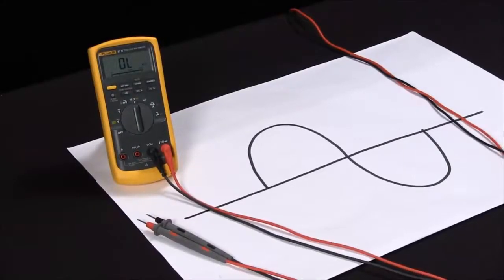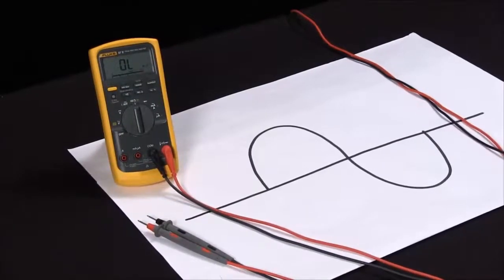We're here to explain the delta or relative function that you'll find on meters and we're using the Fluke 87.5 as the example.